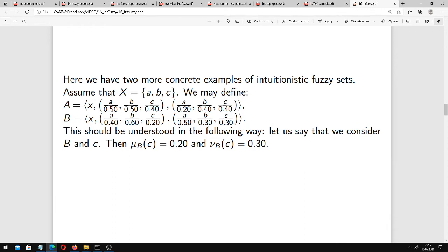And for example, in the set A, we have, let's say, membership on the level 0.50 for small a and non-membership level for small a, for an element a, 0.20.